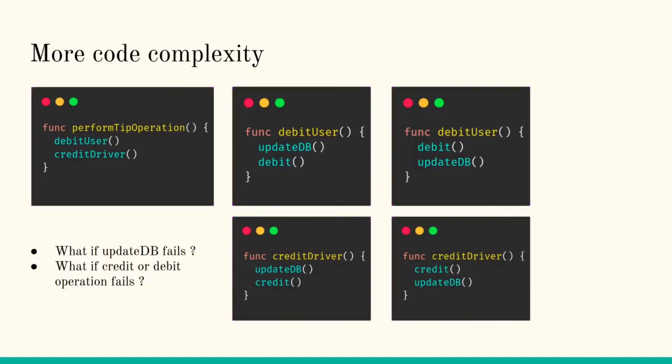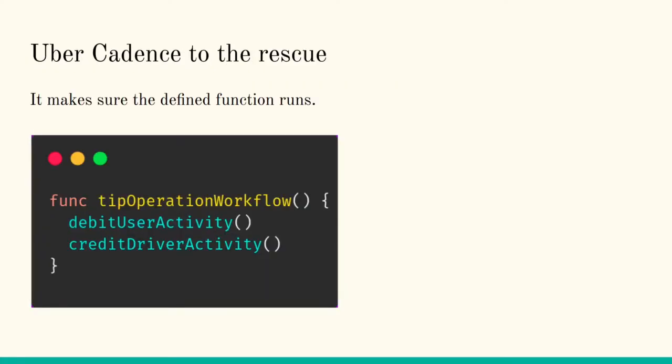So that's the purpose. Now how Cadence works—it doesn't understand the function directly. A function, suppose the tip operation, it will be called as a workflow which contains a series of steps that are going to execute. So tip operation workflow, it's a workflow, and whatever the individual functions that we are calling in between, like debiting the user and crediting the driver, these functions will be known as the activities, individual activities. So debit user activity and credit driver activity.